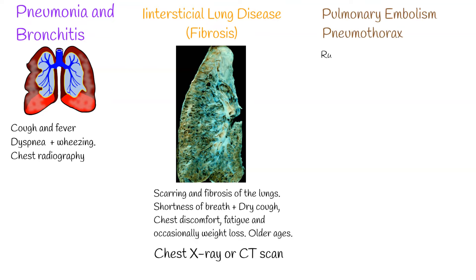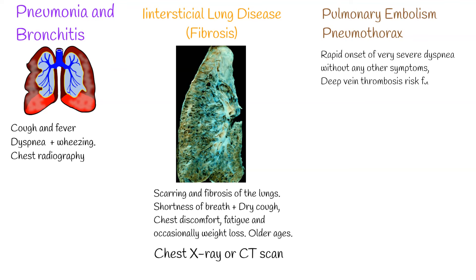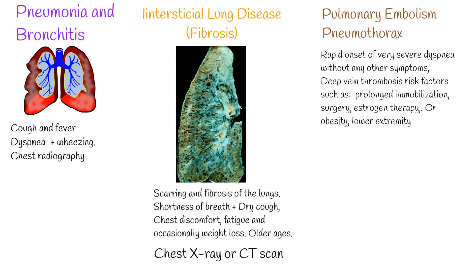Rapid onset of very severe dyspnea without any other symptoms can indicate pulmonary embolism or pneumothorax, though such cases are rare. Pulmonary embolism should always be suspected if a person has new onset of dyspnea plus deep vein thrombosis risk factors, such as prolonged immobilization, surgery, estrogen therapy, obesity, lower extremity trauma, and cancer. New onset of dyspnea can be defined as four weeks or earlier.